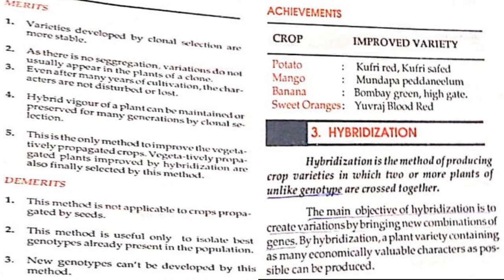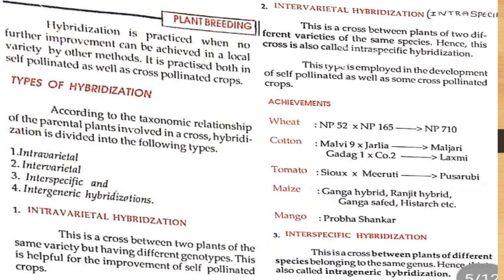Hybridization is the method of producing crop varieties in which two or more plants of unlike genotype are crossed together. The main objective of hybridization is to create variation by bringing new combinations of genes, so that a plant variety containing as many economically valuable characters as possible can be produced. Hybridization is practiced when no further improvement can be achieved in a local variety by other methods. It is practiced in both self-pollinated and cross-pollinated crops.